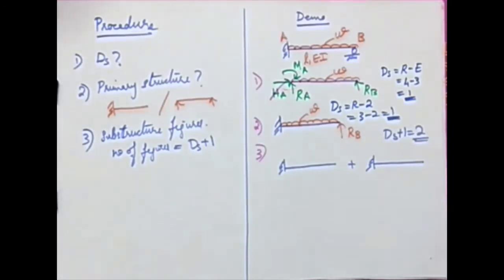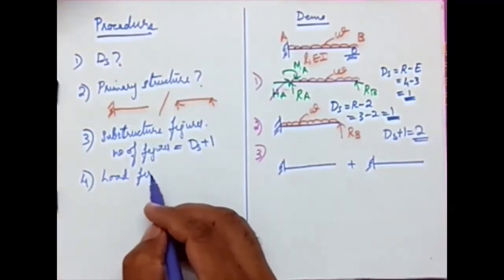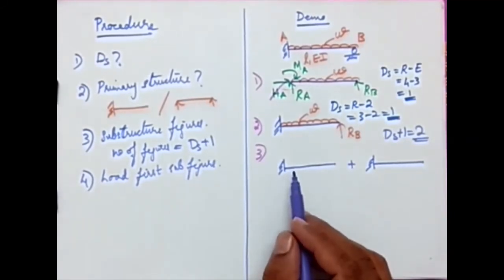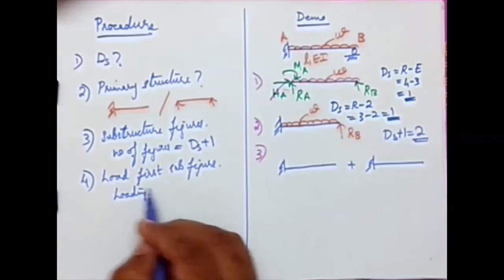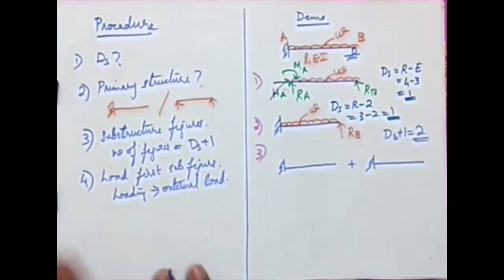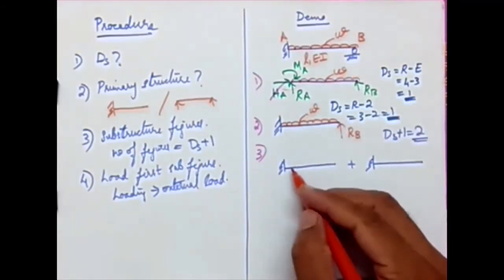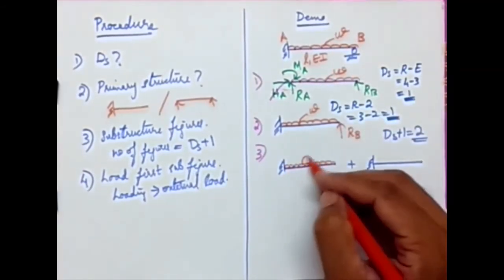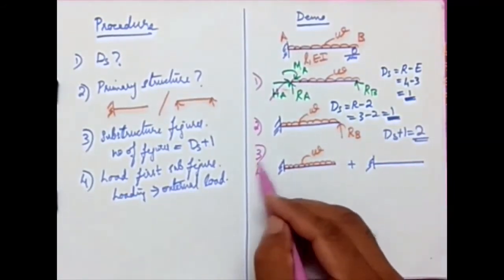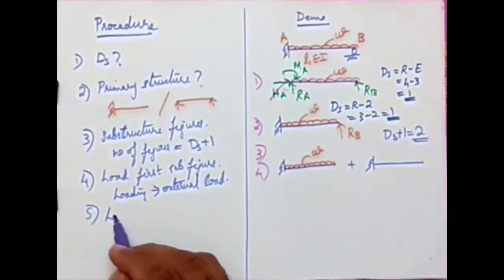Step 4: load the first sub-figure with the external load. Whatever external load is given in the problem should be applied to Figure 1. In our case the external load is W, so in the first figure we apply the UDL of intensity W.